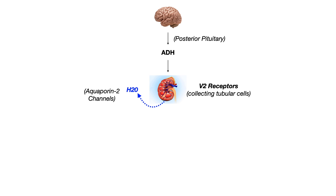When this happens to a normal extent, the body is just concentrating its urine because it's pulling water out of the urine, and therefore the urine is more concentrated because less water is present in the urine. So that's how ADH functions normally or physiologically.